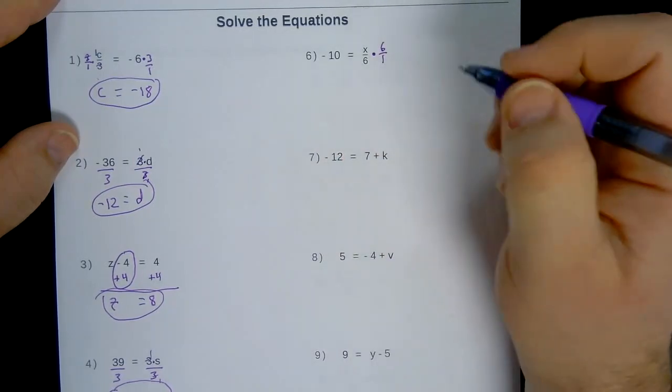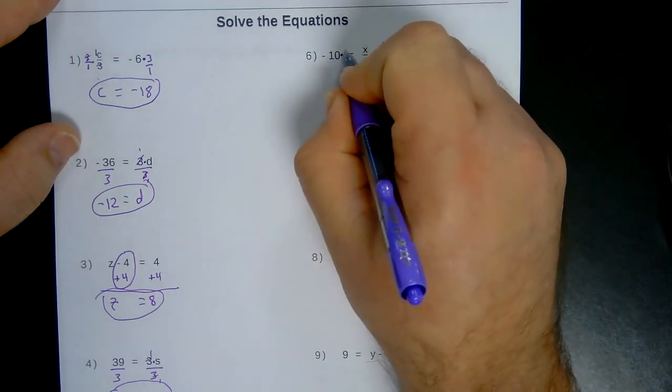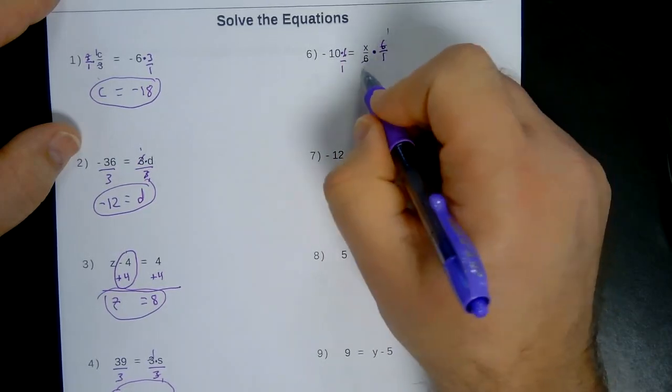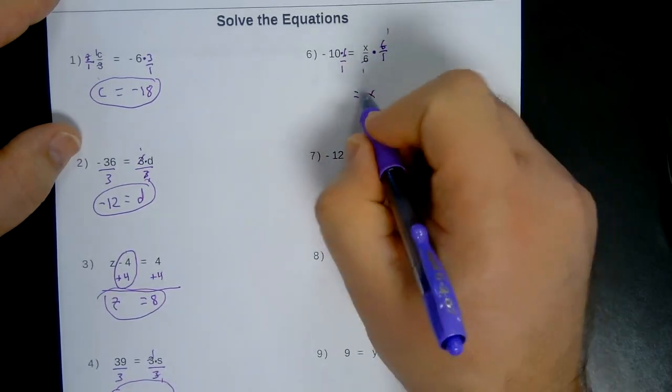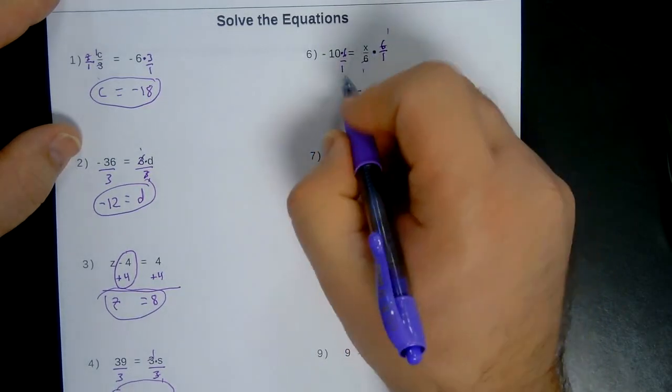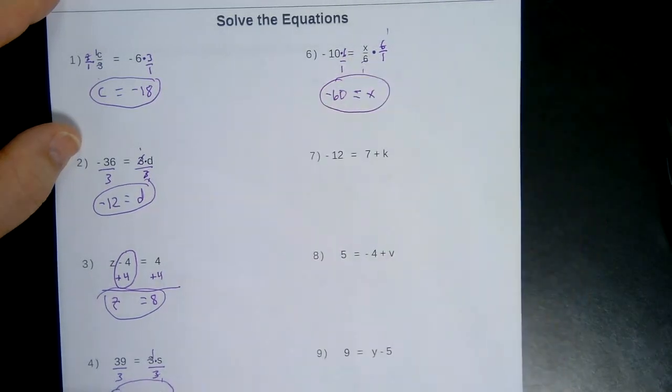On the right, it's a fraction, 6 over 1. And then over here on the left side, times by 6 over 1. 6 is canceled. And you have X on the right. And negative 10 times 6 is negative 60. Final answer.